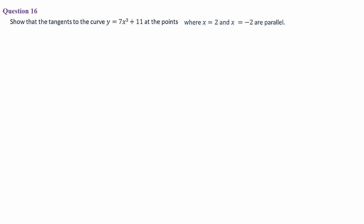Question number 16: Show that the tangents to the curve y = 7x³ + 11 at the points where x = 2 and x = −2 are parallel. Since tangents are straight lines, two lines are parallel when their slopes are equal. We find dy/dx at x = 2 and at x = −2 and verify both slopes are the same.